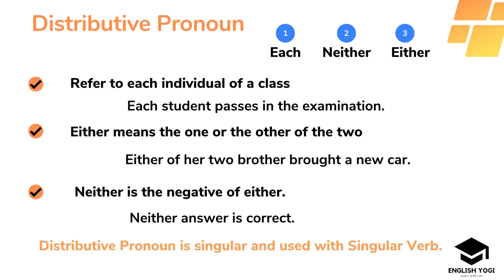The next type is distributive pronoun. A distributive pronoun is a pronoun that considers the members mentioned in the word separately. They are 'each', 'either' and 'neither'. For example: 'Each student passes in the examination.' The word 'each' is used here as a distributive pronoun, and it means a separate student. What we have to remember is that a distributive pronoun is singular, and according to the rule, we have to use a singular verb with the distributive pronoun.